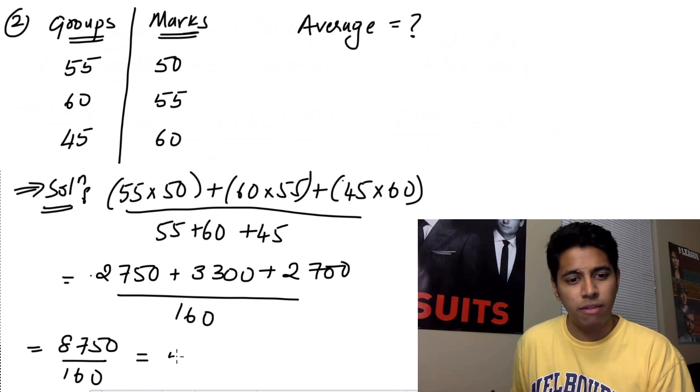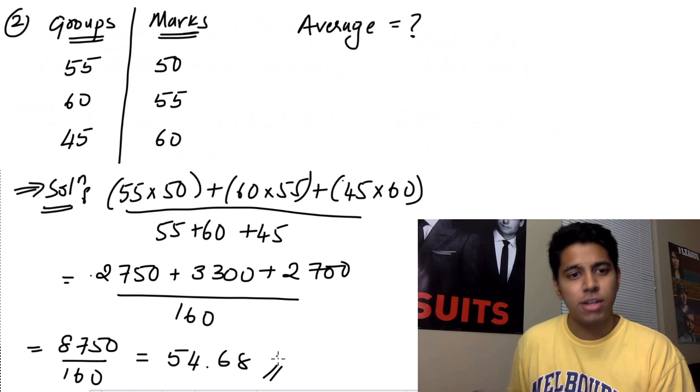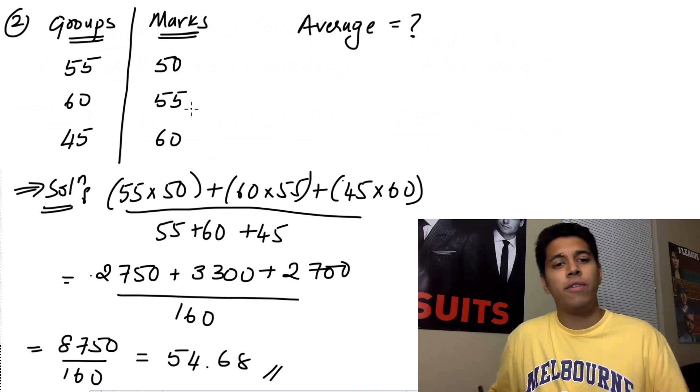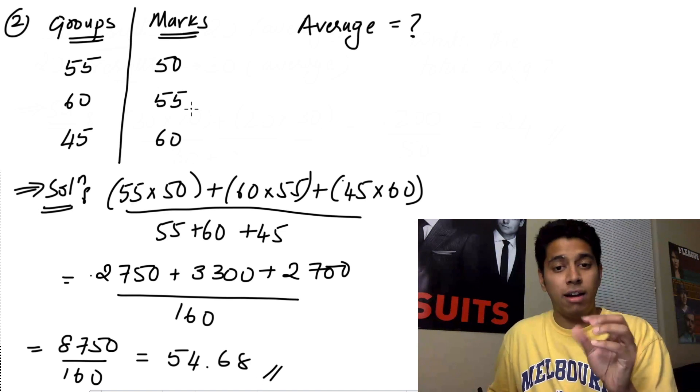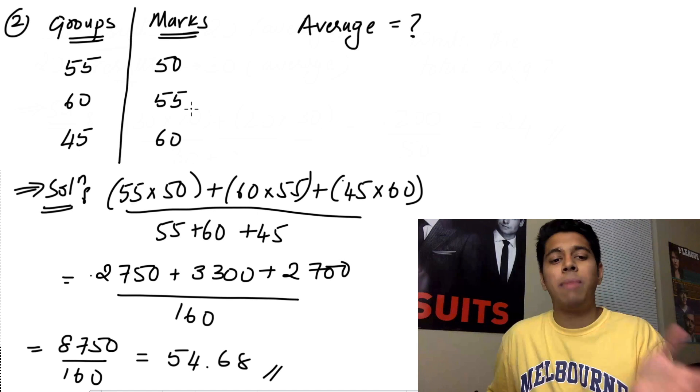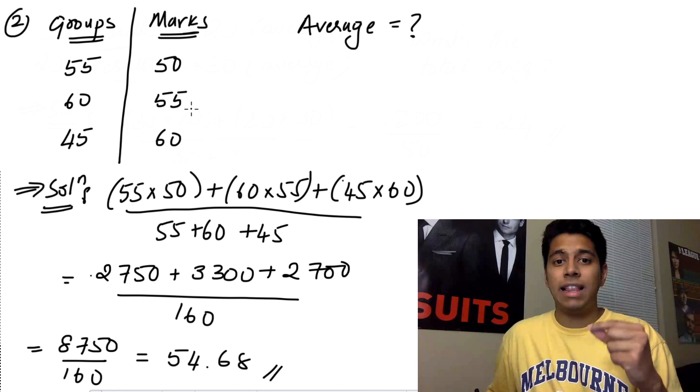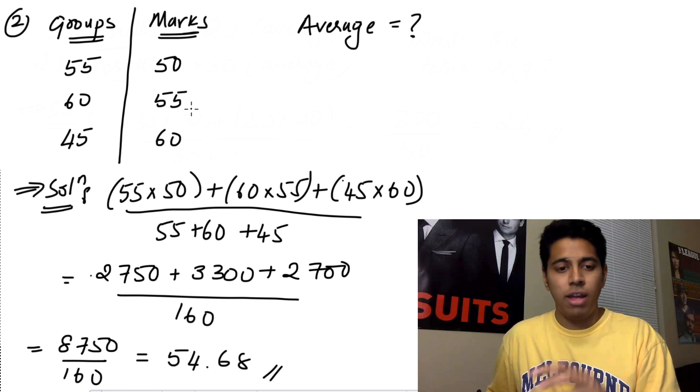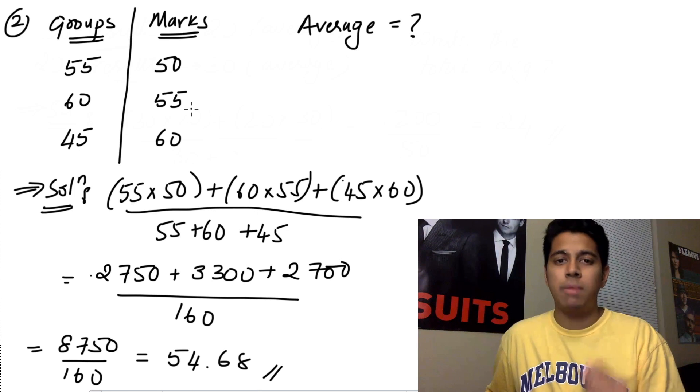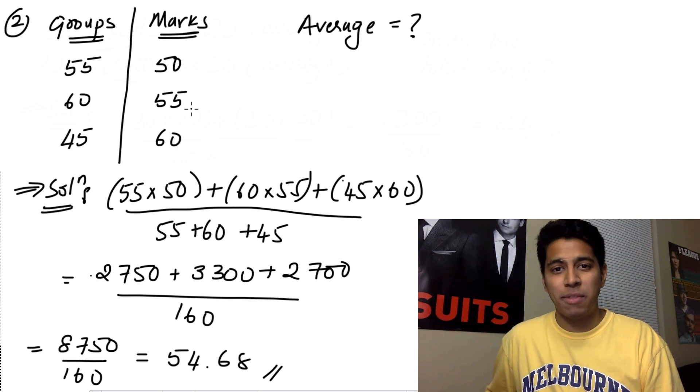And this comes out to be 54.68. So this is nothing close to whatever your marks are in a whole number, but this is your answer. And this might be one of the options. If it isn't exactly, then always select the nearest number. So if it was 55 there, mark 55. But if 54.68 is there, always mark 54.68. Let's go into problem number 3.